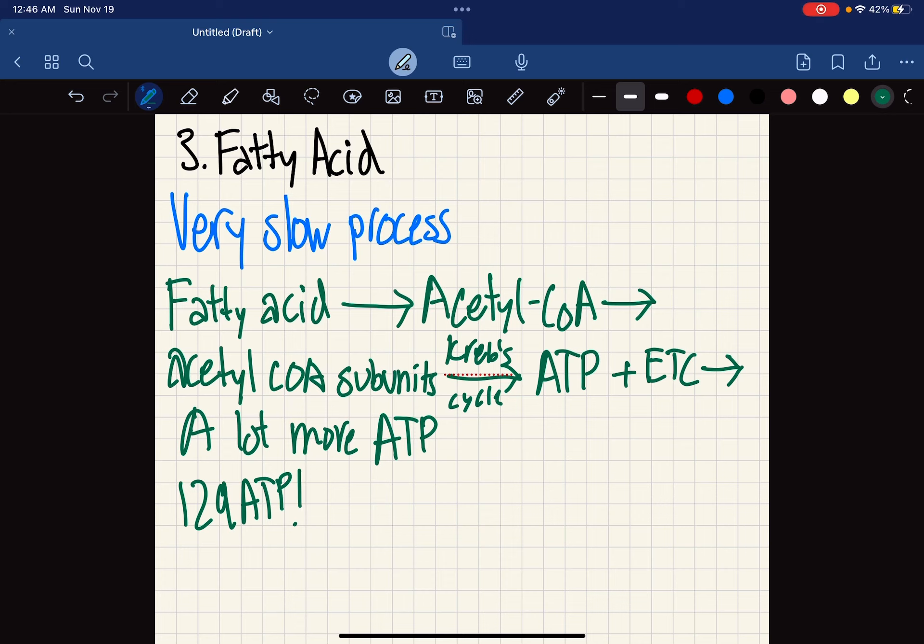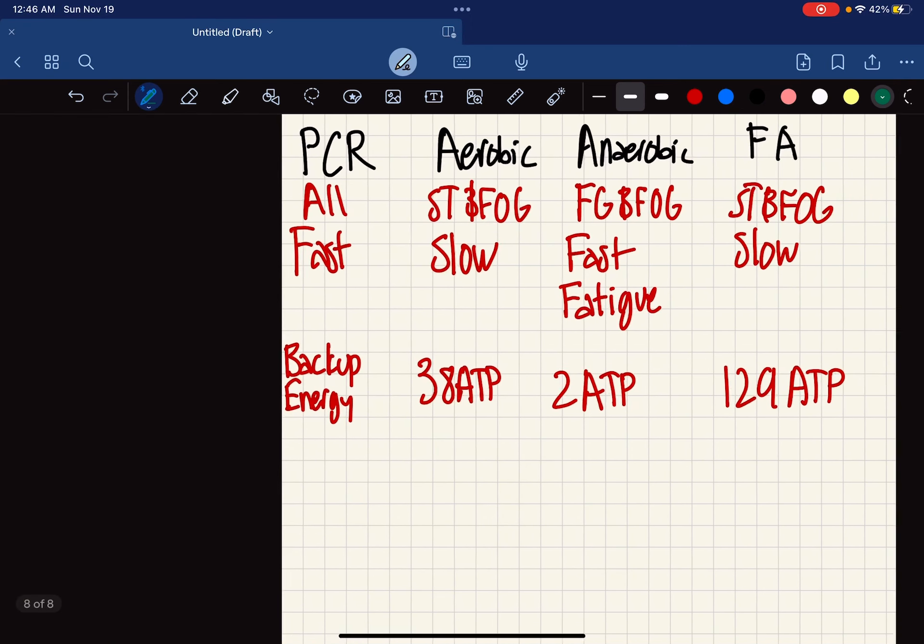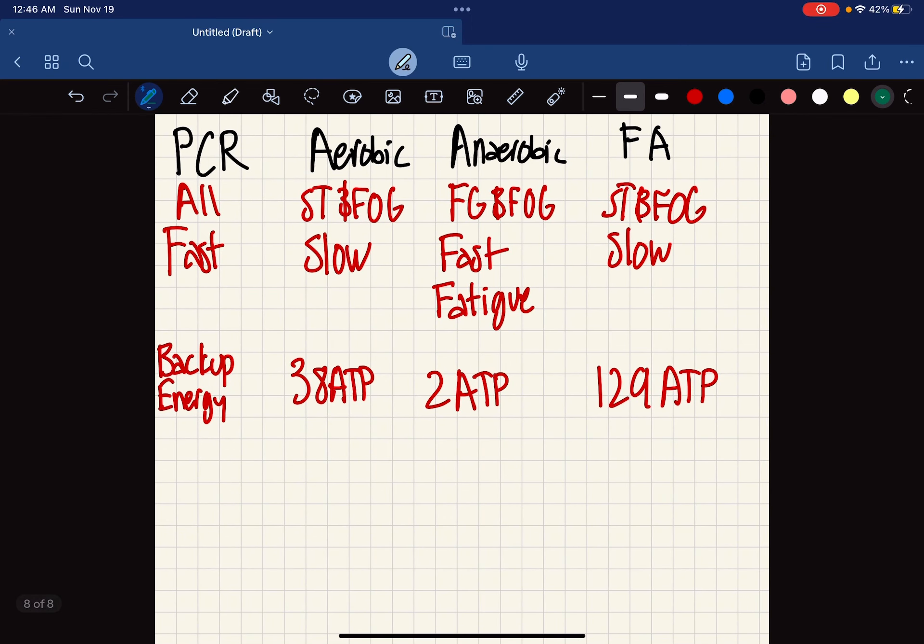Now we know all of them. I created a little chart table thing. There's phosphocreatine right here, the aerobic right here, the anaerobic, and then the fatty acids.